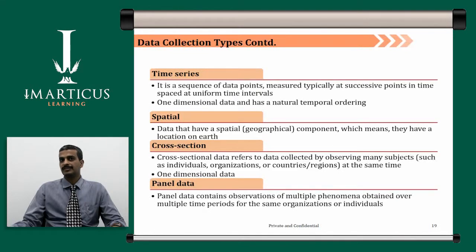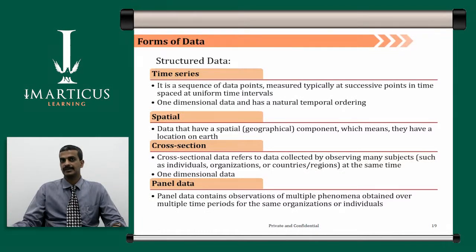Cross-section data refers to data collected by observing many subjects — such as individuals, organizations, countries, or regions — at the same time; this is one-dimensional in nature. Panel data contains observations of multiple phenomena obtained over multiple time periods for the same organizations or individuals.